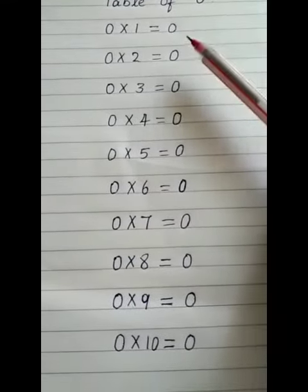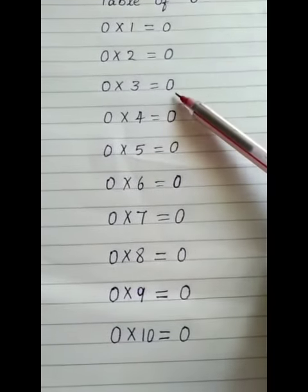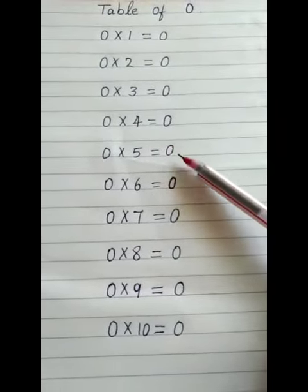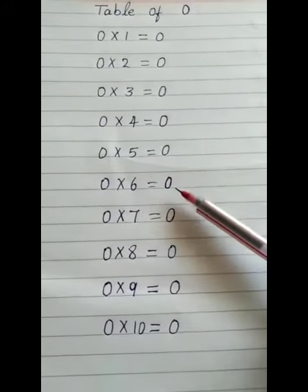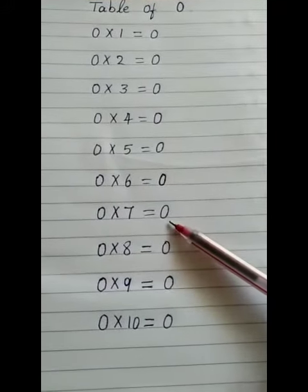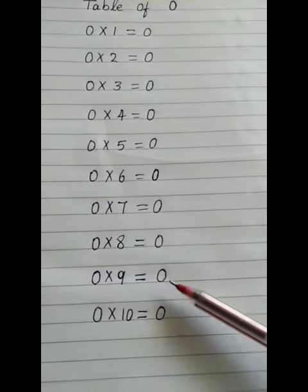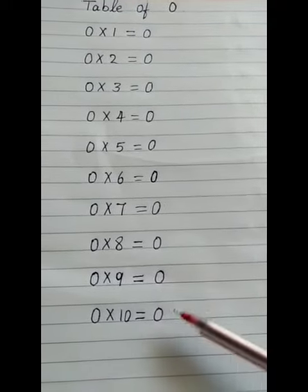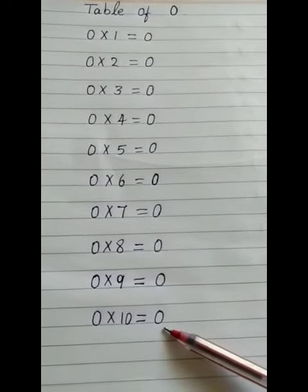0 ones are 0, 0 twos are 0, 0 threes are 0, 0 fours are 0, 0 fives are 0, 0 sixes are 0, 0 sevens are 0, 0 eights are 0, 0 nines are 0, 0 tens are 0.